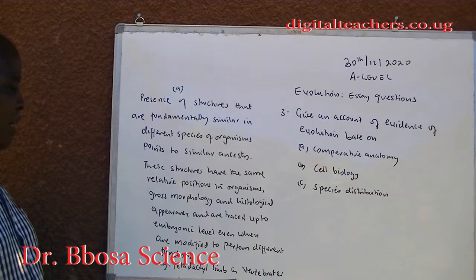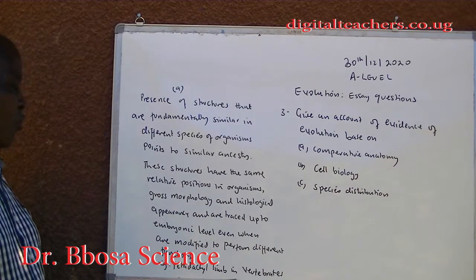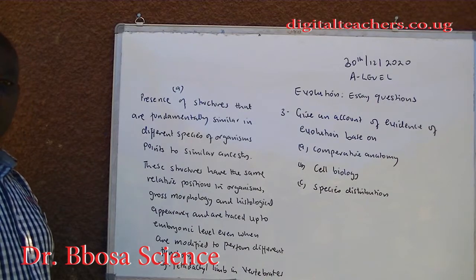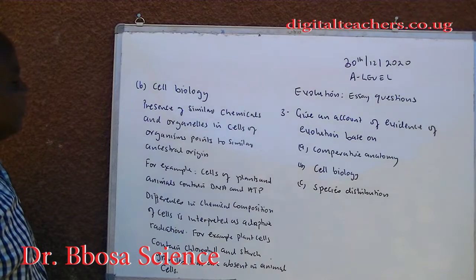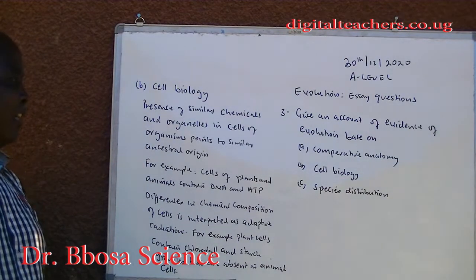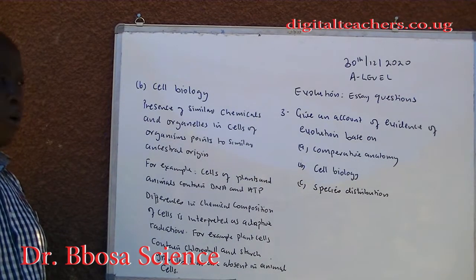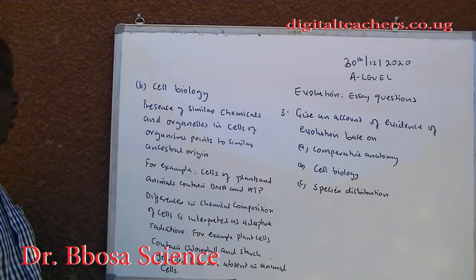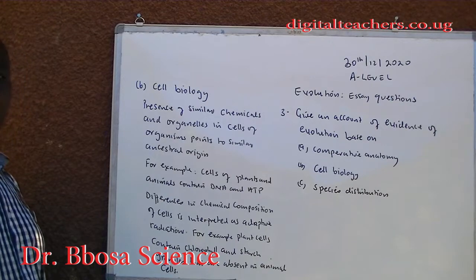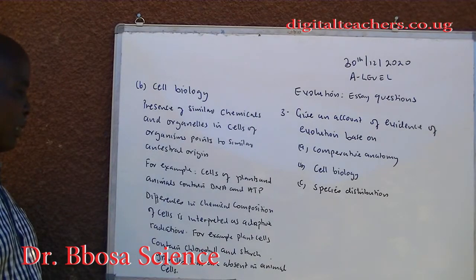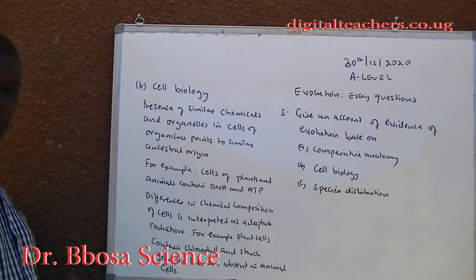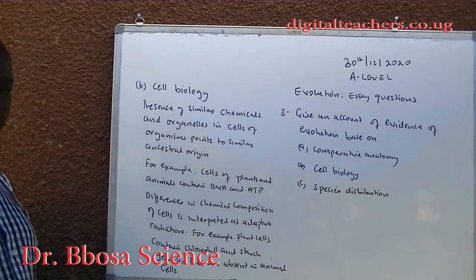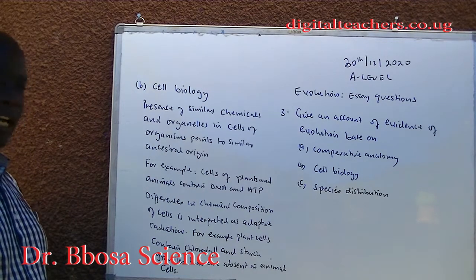Comparative anatomy: Organisms share similar structures up to the embryonic level, even when they are modified to perform different functions. An example is the pentadactyl limb in vertebrates. Cell biology: The presence of similar chemicals and organelles in the cells of different organisms points to a similar ancestral origin. For example, cells of plants and animals contain DNA and ATP.